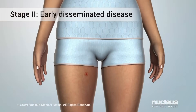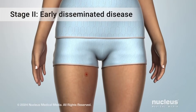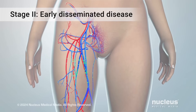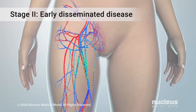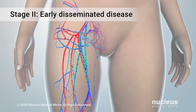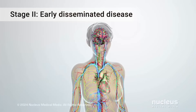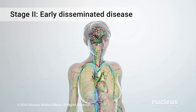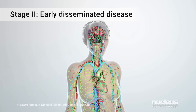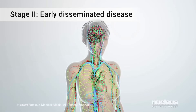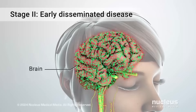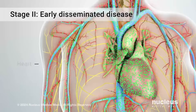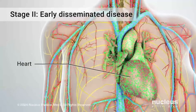During the early disseminated stage, the bacteria begin to enter your bloodstream. This happens days to weeks after the bite. The bacteria can spread throughout your bloodstream to inflame the tissue of your organs, including your liver, brain, nerves, and heart.